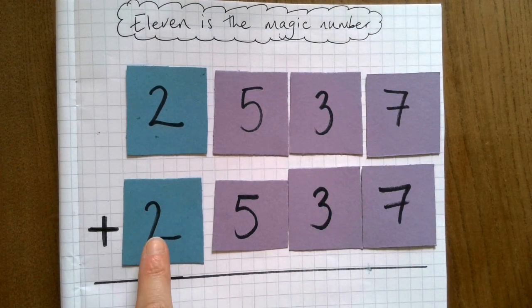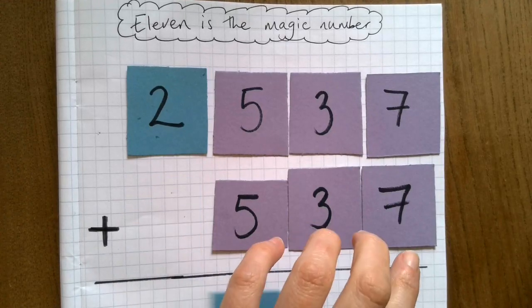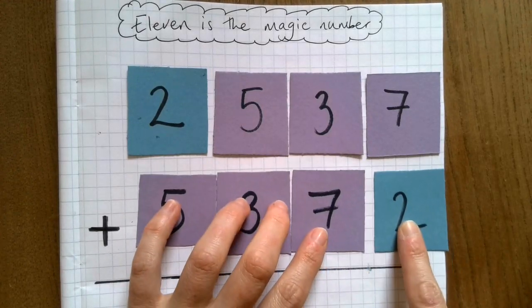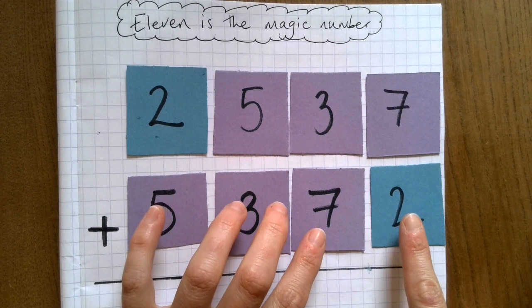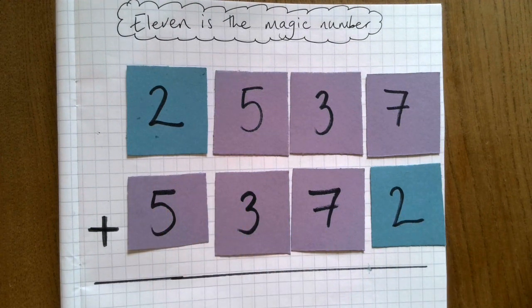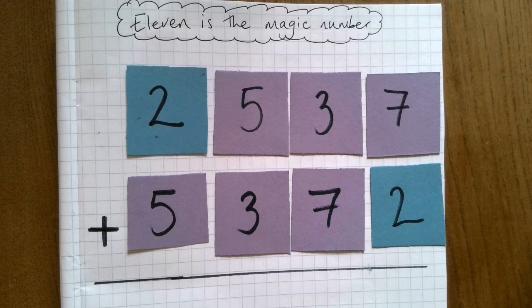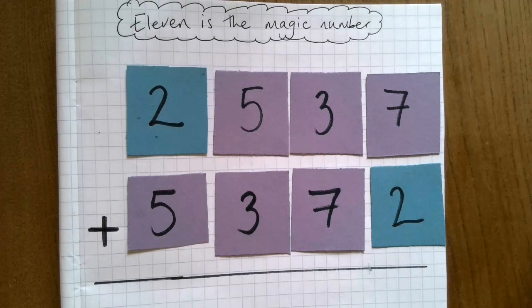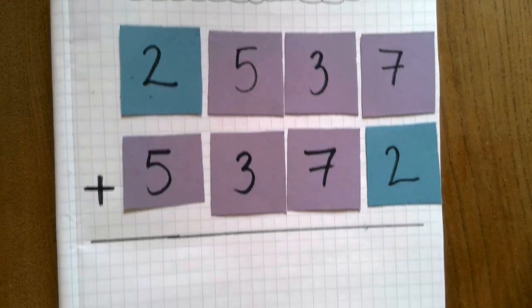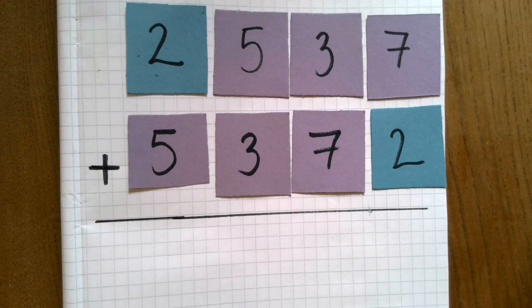So I'm going to add together 2537 and 5372. If I add those together, I get 7909.